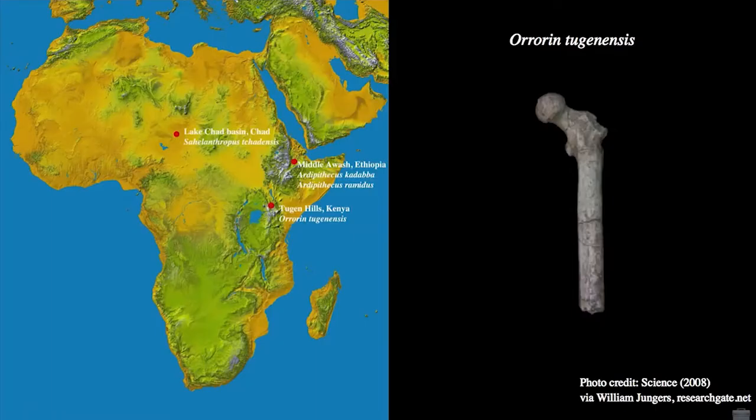The specimen itself is represented by a number of fossils, including a few jaws, teeth, and parts of the postcranial skeleton, but the most significant fossil is probably this proximal femoral fragment.